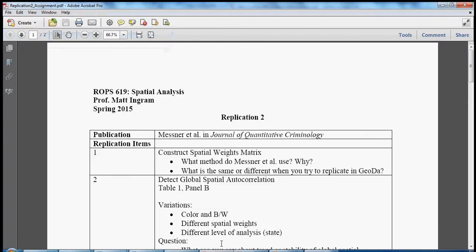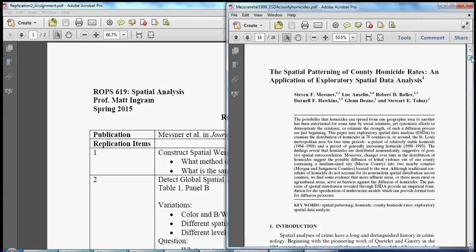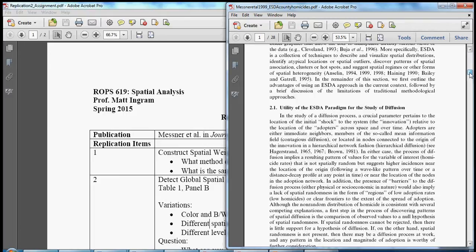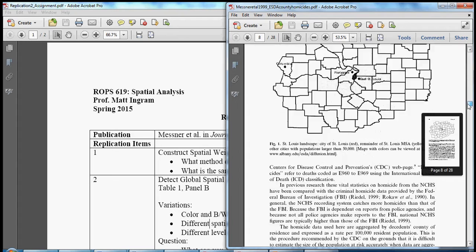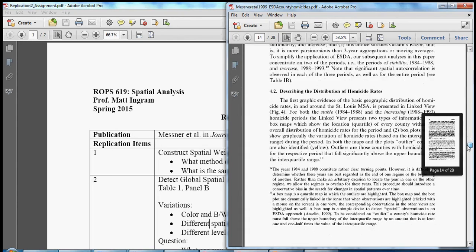Hi everybody, so we're continuing with replication number two of Messner et al's piece in the Journal of Quantitative Criminology. This is the article and in this second video we are moving on from tests of global spatial autocorrelation and some basic examination of the distribution of our variable of interest to look at local spatial autocorrelation.